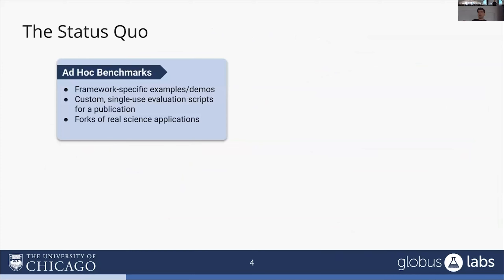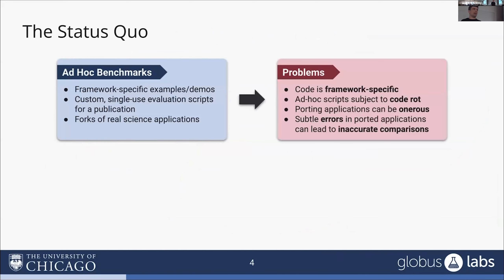What's the status quo in comparing task execution frameworks? Well, it's mostly ad hoc benchmarks. We take a framework-specific example or demo, write a custom one-off evaluation script for a publication, or make a fork of a real science application. This has a lot of problems: code ends up very framework-specific, ad hoc scripts are subject to code rot, and porting applications between different frameworks that have different syntaxes and structures is very difficult. You might incorporate subtle errors when porting that make your comparisons inaccurate, even if unintended.